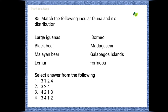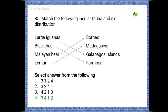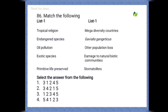Next question: match the following. Here also we have to match list one with list two. Large iguanas, black bear, Malayan bear, lemur — depending upon their distribution. The matching is: large iguanas — Galapagos Islands; black bear — Formosa; Malayan bear — Borneo; lemur — Madagascar.